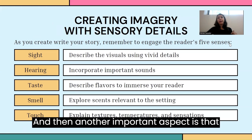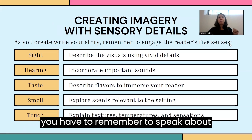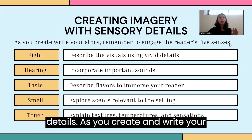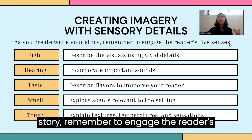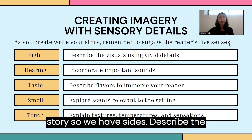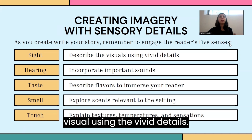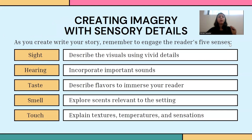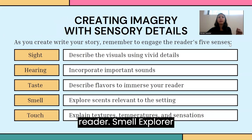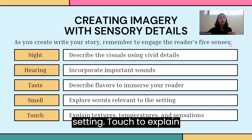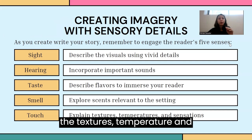Another important aspect is to engage all five senses. As you create and write your story, remember to engage the reader's five senses and describe the whole environment. Sight: describe visuals using vivid details. Hearing: incorporate important sounds. Taste: describe flavors to immerse your reader. Smell: explore scents relevant to the setting. Touch: explain textures, temperature, and sensations.